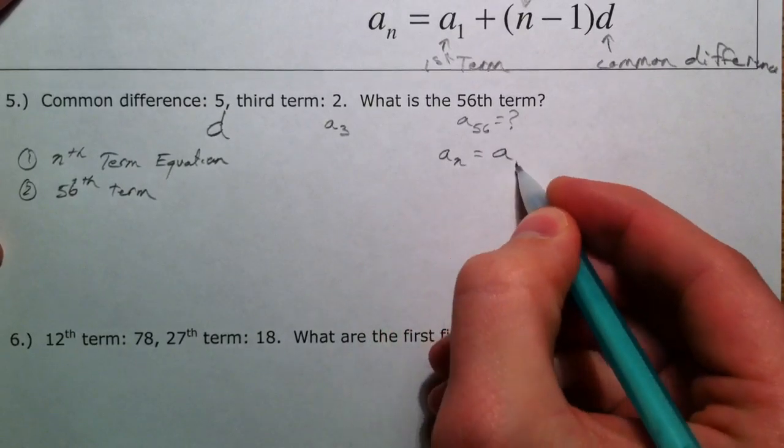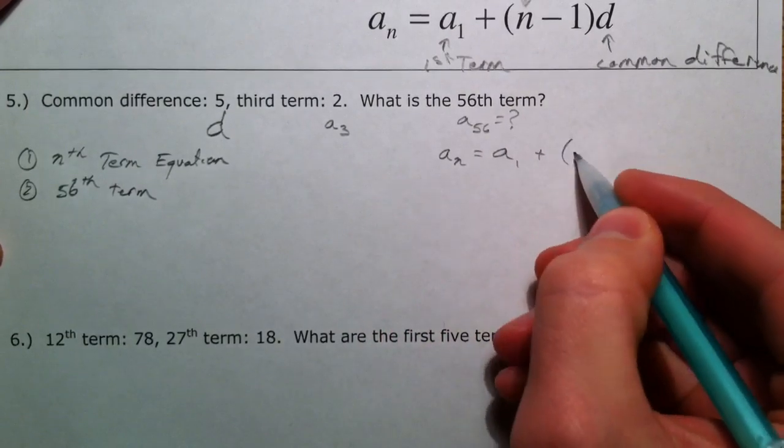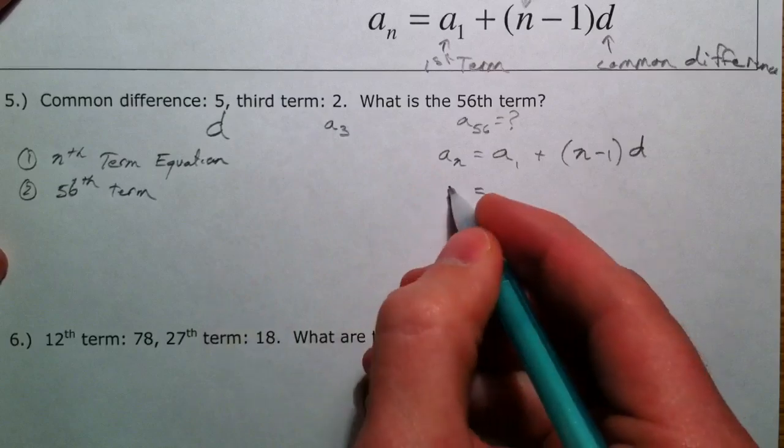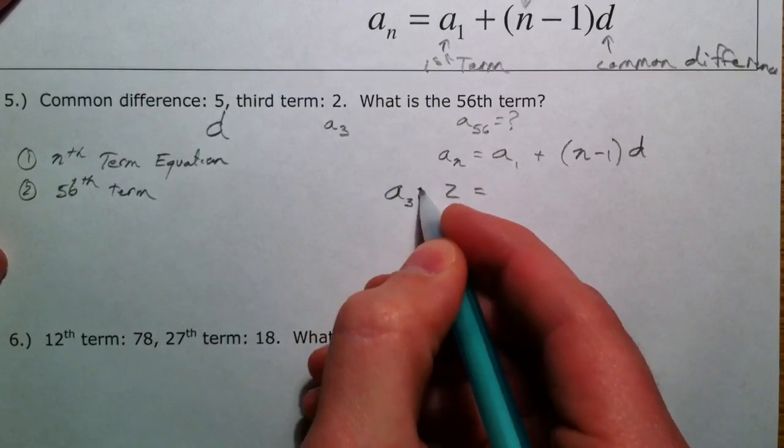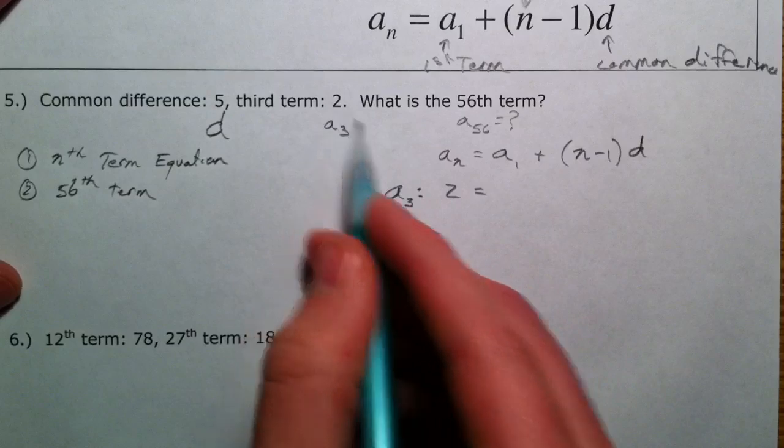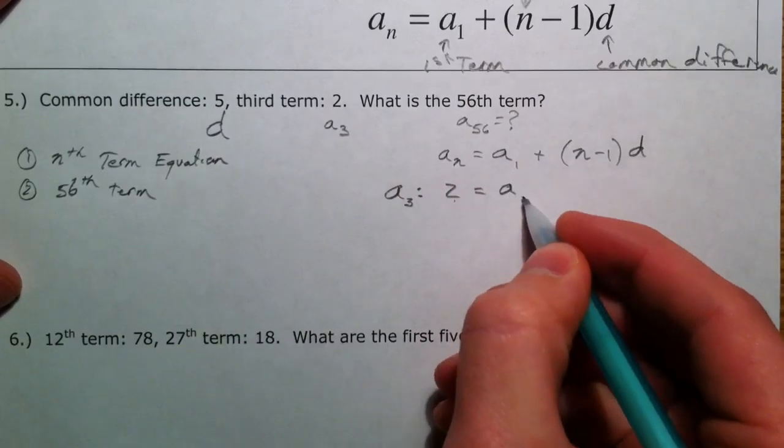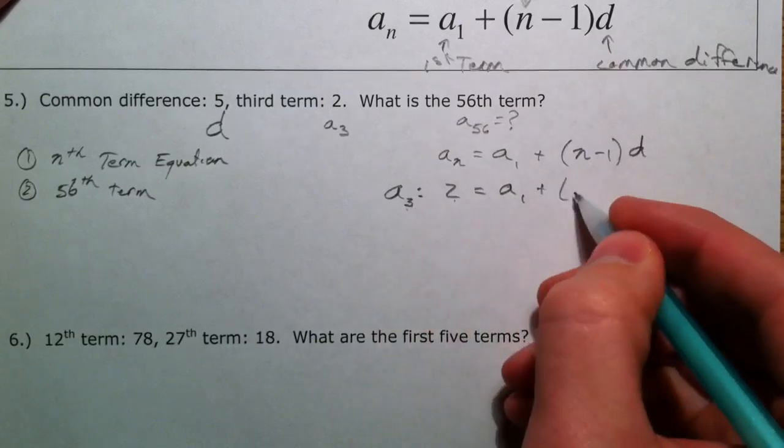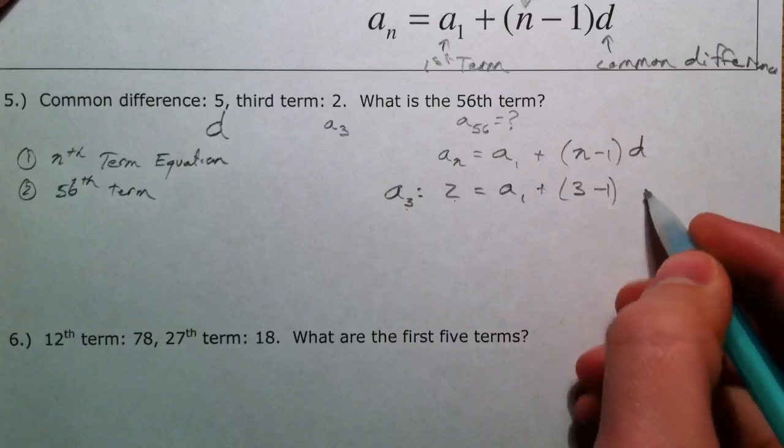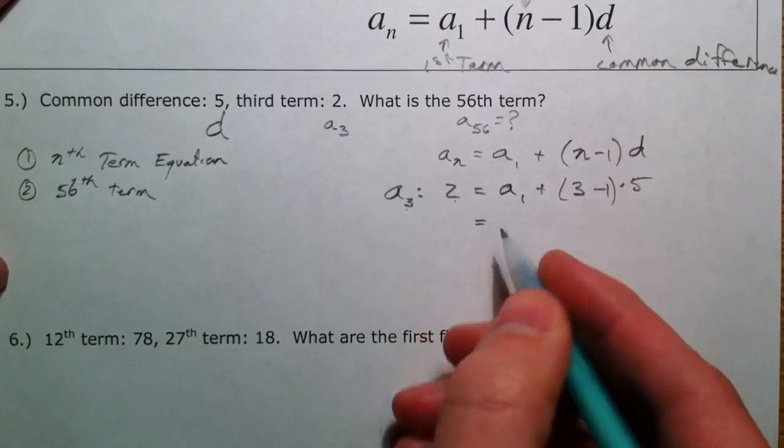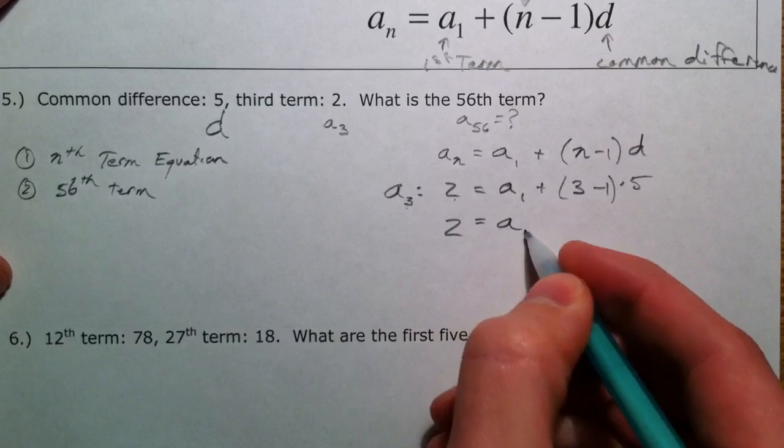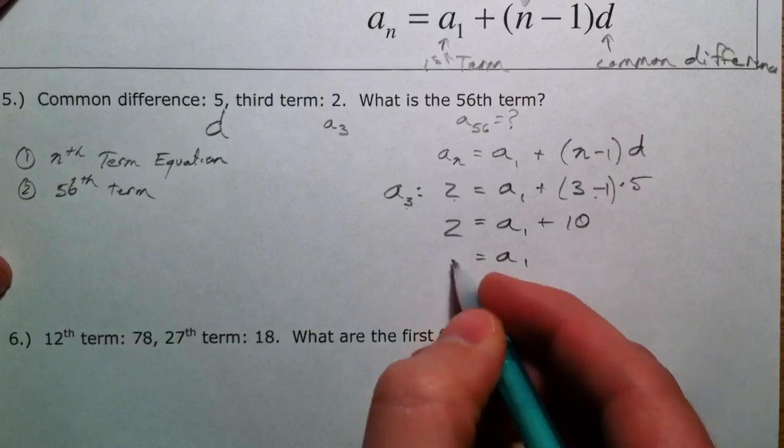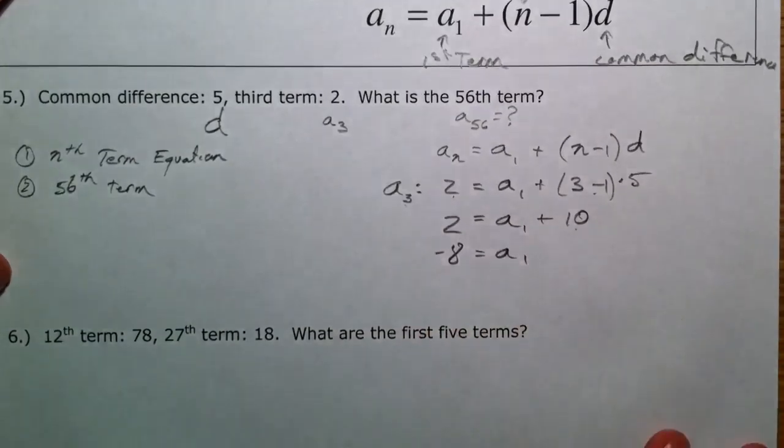We have our equation, a sub n equals a sub 1 plus n minus 1 times d. I have my third term, and so we're going to use a sub 3 to our advantage. We know our third term is 2. Our first term we don't know, so that's what we're going to find. For our third term, n is 3, so 3 minus 1 times 5. So we have 2 equals a sub 1 plus 10, and then a sub 1 is negative 8.